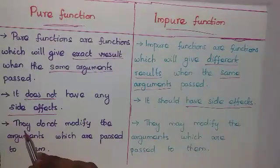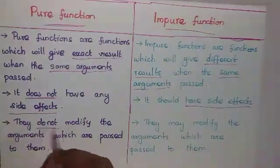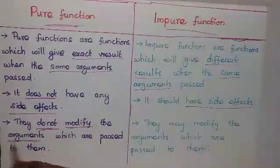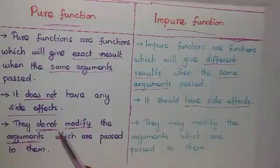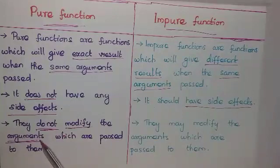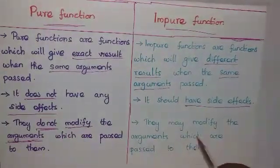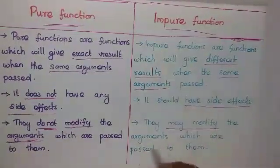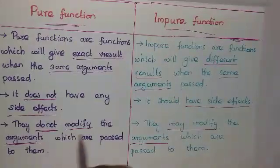Pure functions do not modify the arguments that are passed to them — inputs cannot be changed in a pure function. Impure functions, on the other hand, may modify the arguments that are passed to them.